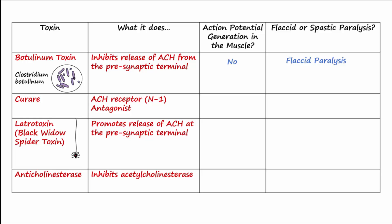Curare was a toxin used by Native Americans to take down animals while hunting. Curare causes paralysis of the animal's skeletal muscles, making it unable to move. Curare is a neuromuscular blocker that binds to and blocks nicotinic-1 acetylcholine receptors, keeping ligand-gated sodium channels from opening. This action prevents action potentials from being generated in the muscle and results in flaccid paralysis.